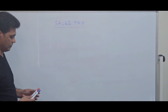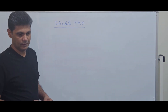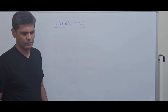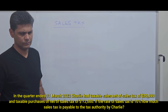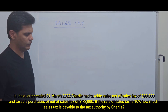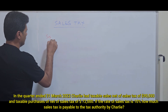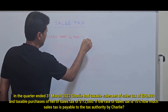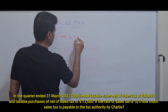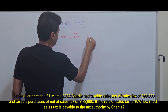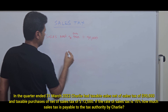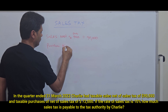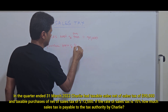The third question: in the quarter ended 31st March 2020, Charlie had taxable sales net of sales tax of $90,000, and taxable purchases of $72,000, also net of sales tax.